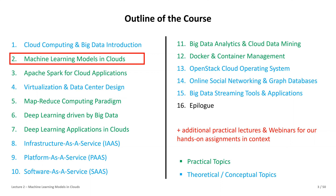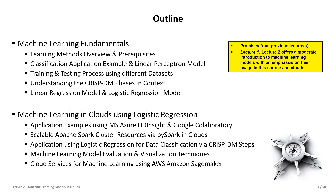So much for Lecture 1 — it was a 10,000-feet perspective. Today we want to narrow down into machine learning. I promised a moderate introduction, with no real prerequisites — you should learn this from scratch. We'll look at how to deploy this in cloud examples like Google Colaboratory or HDInsight. We start with machine learning fundamentals: learning methods, supervised versus unsupervised, and a classification application example, bringing us to the simplest model called the linear perceptron, always incorporating CRISP-DM steps.